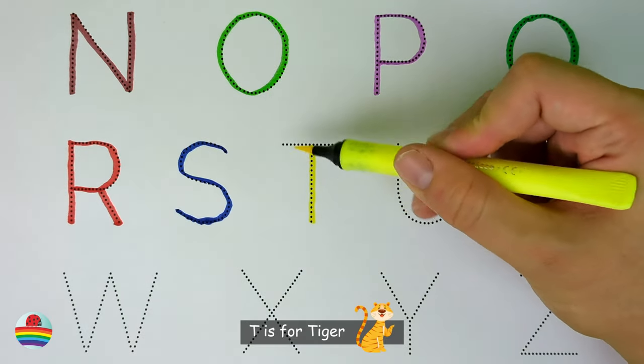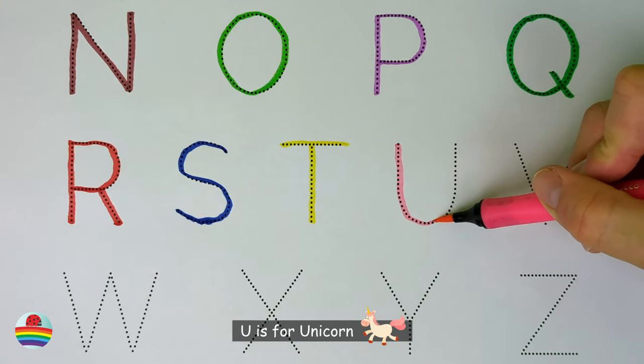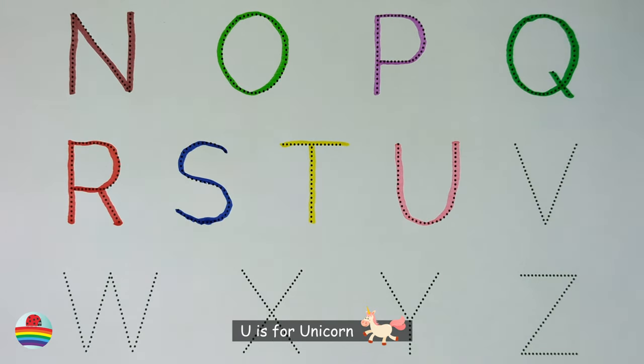T. T is for tiger. T. U. U is for unicorn. U.